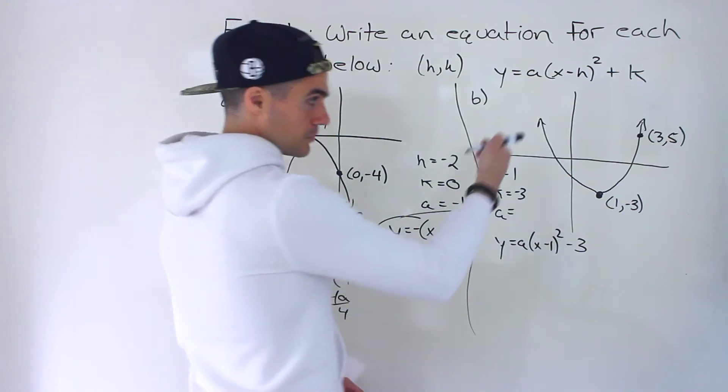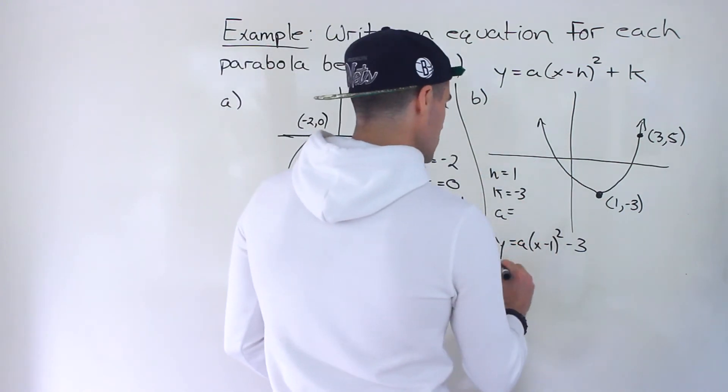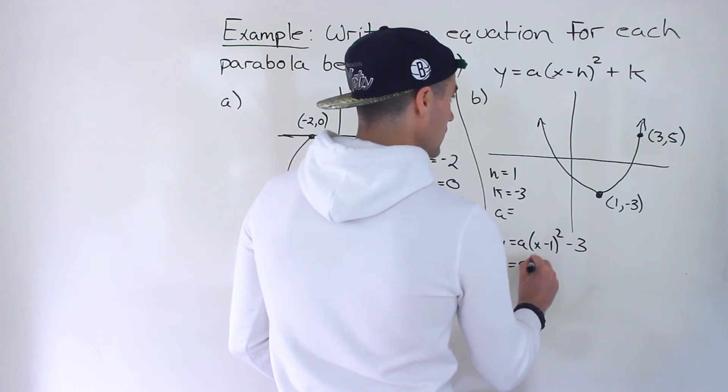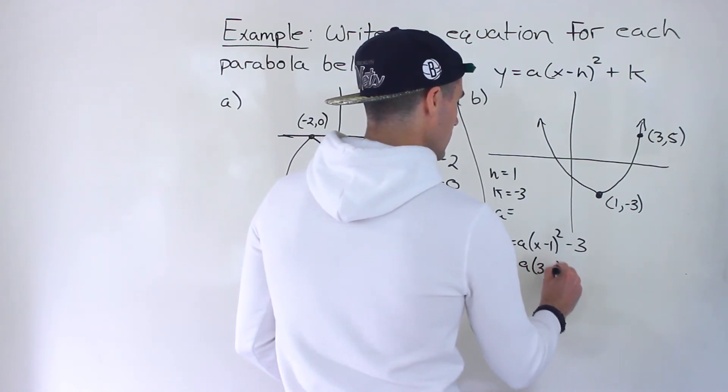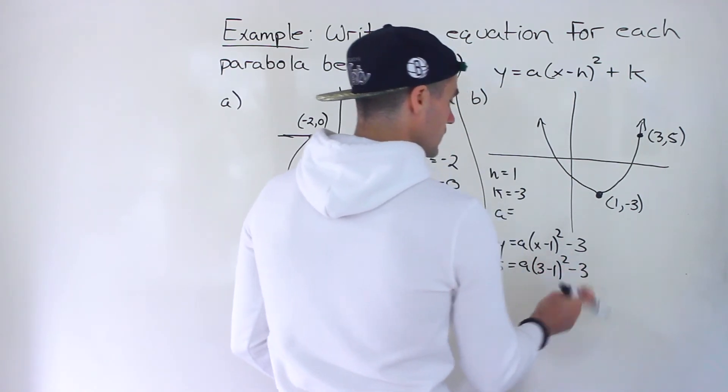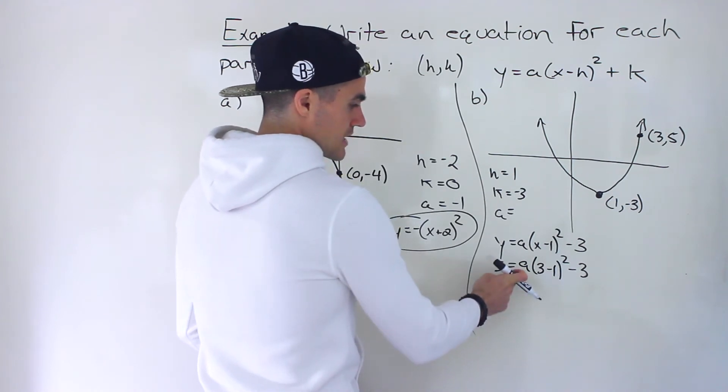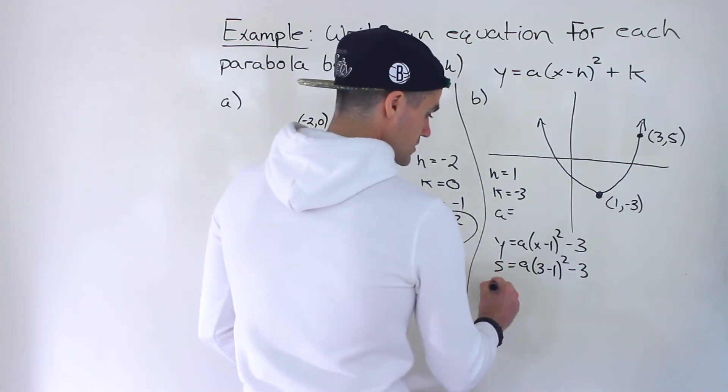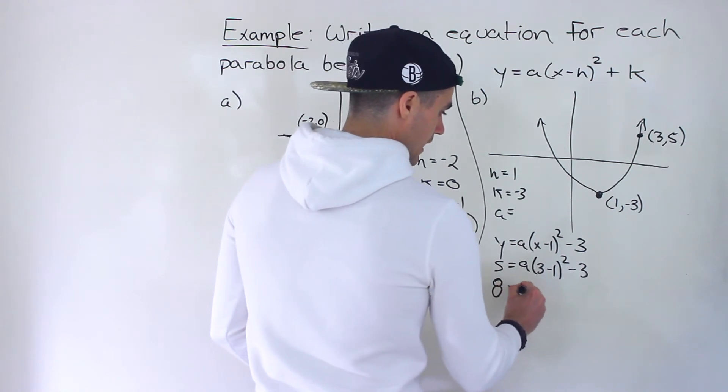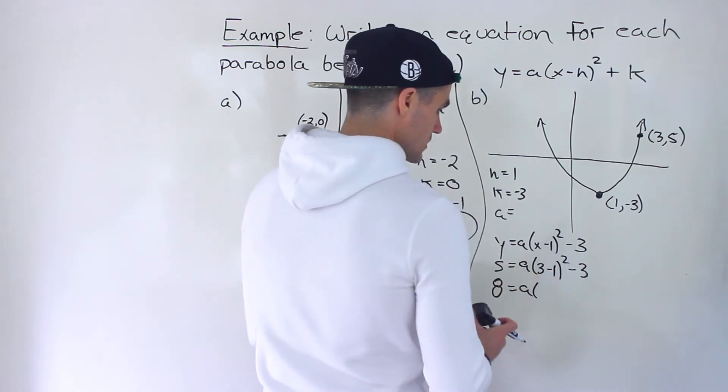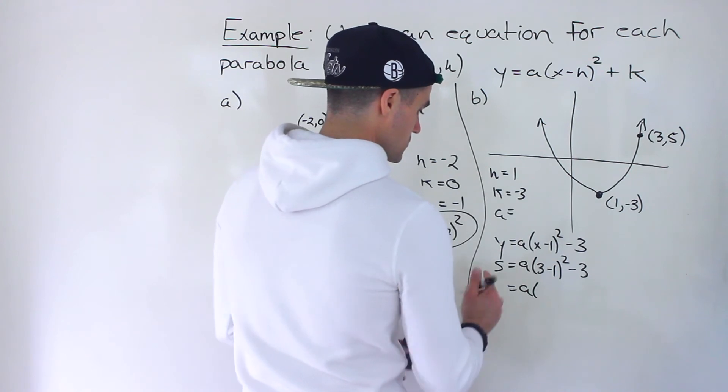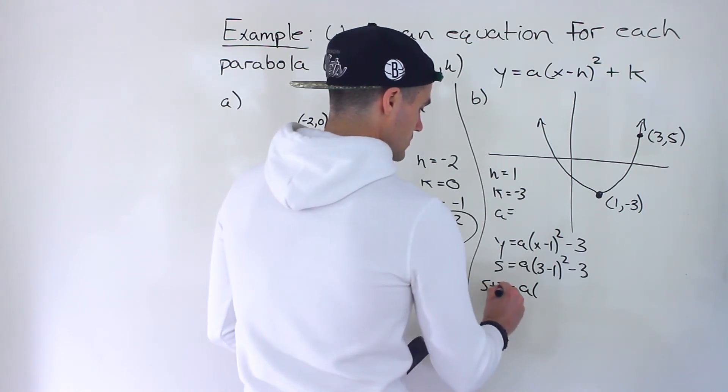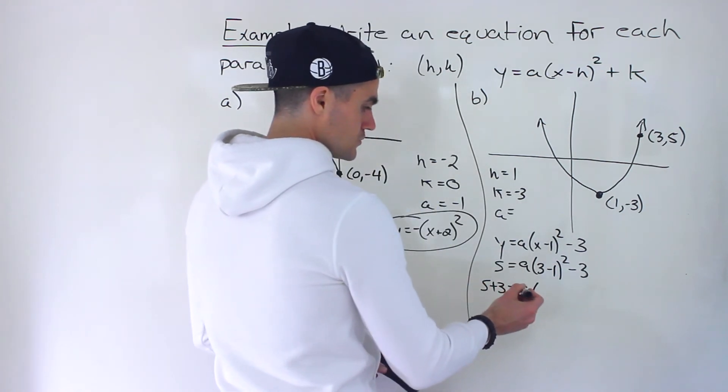To solve for that, we could plug in the other point, three and five. So we'll plug in five for y and then three for x. And we got minus three. Then from here, we just have to isolate for this a value. So we could bring the negative three over, five plus three gives us eight. And then let me just show you in steps what's going on, so we're not doing too many steps at once.